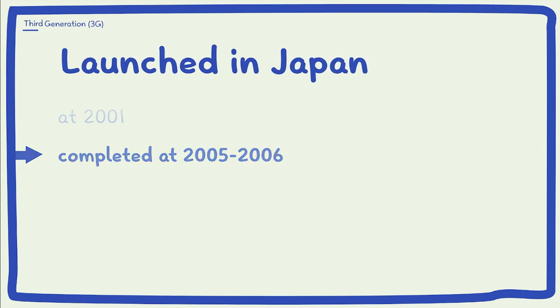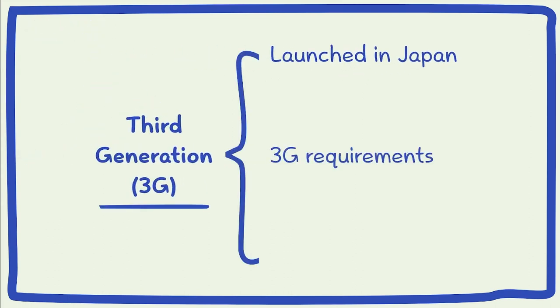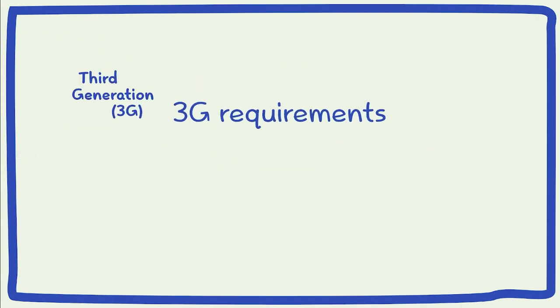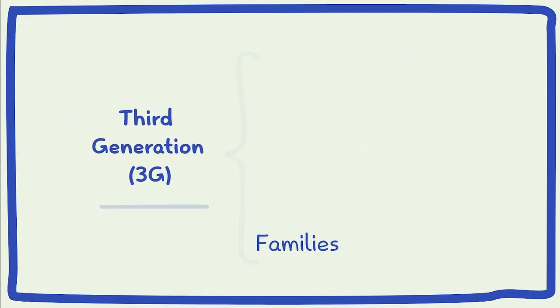The International Telecommunication Union (ITU) defined the requirements for 3G in the International Mobile Telecommunication (IMT) 2000 to promote growth, enhance bandwidth and support various applications. The 3G family of technology includes 3.5G and 3.75G.